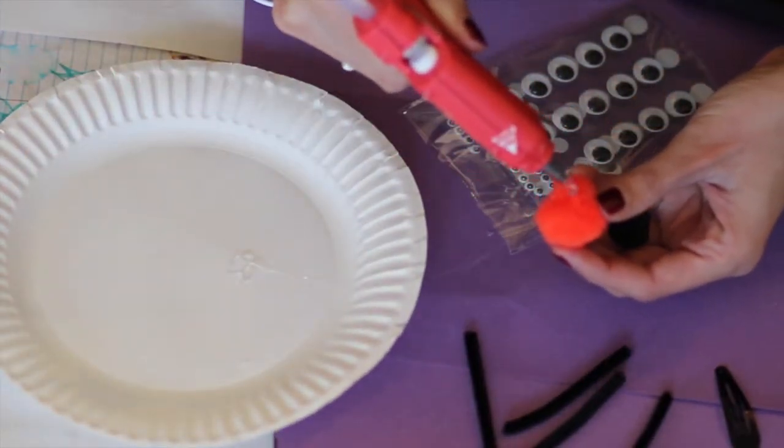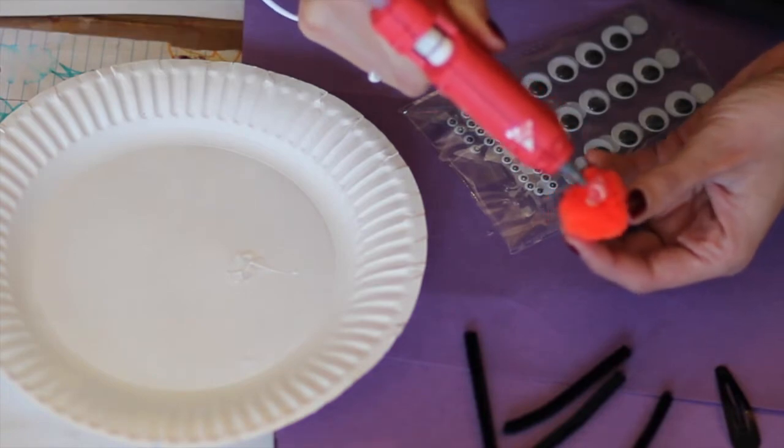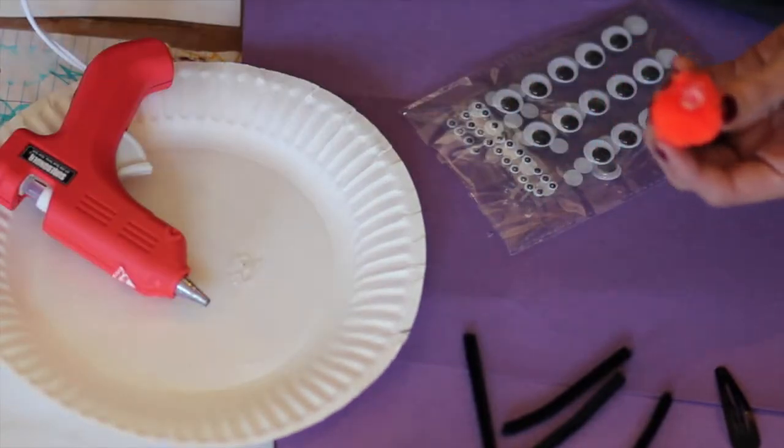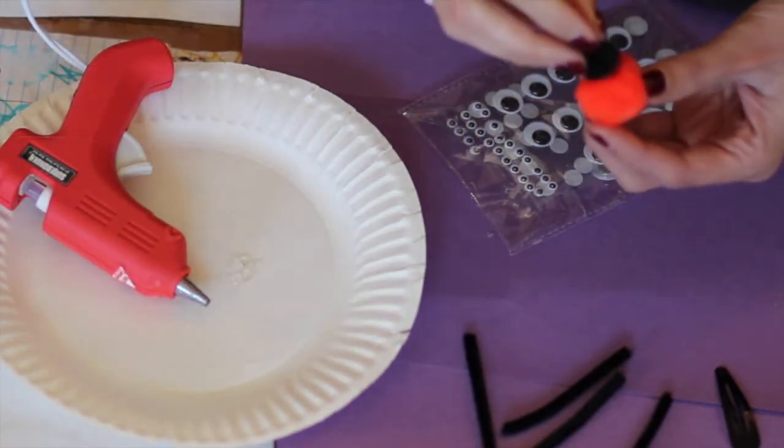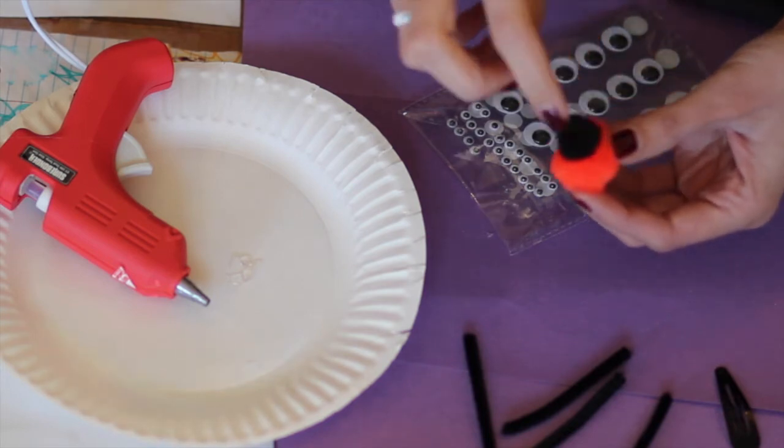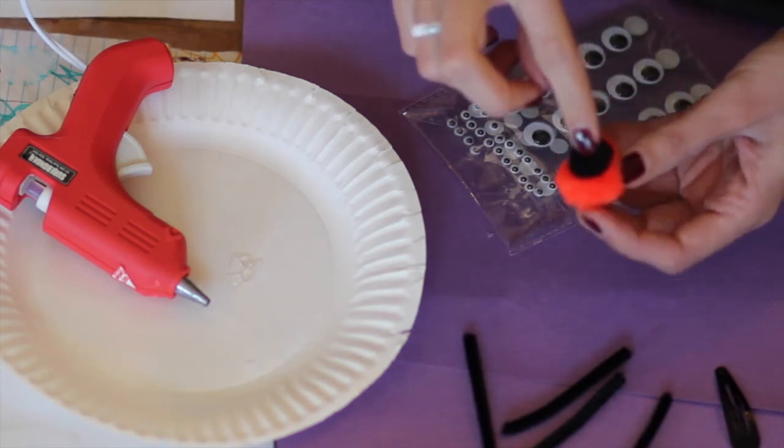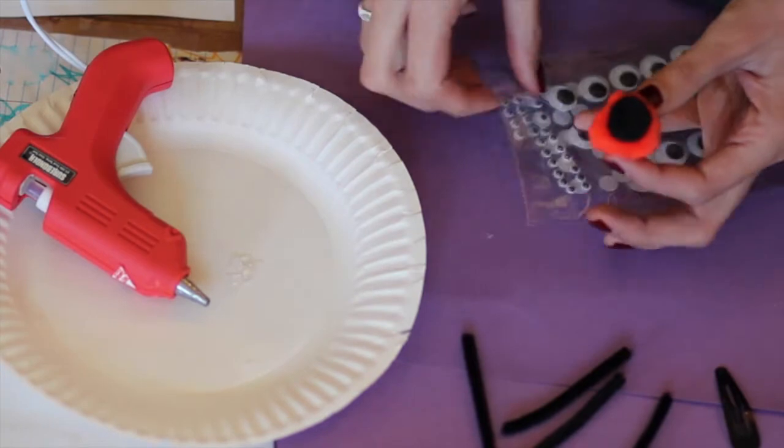So we're going to take the larger orange puff ball, and I'm going to take my hot glue gun, put some glue on there, and then stick the head on, which is the smaller black puff ball.